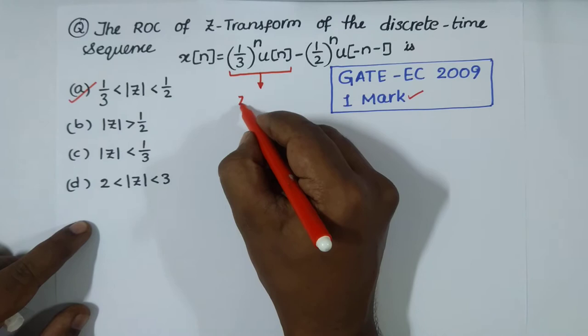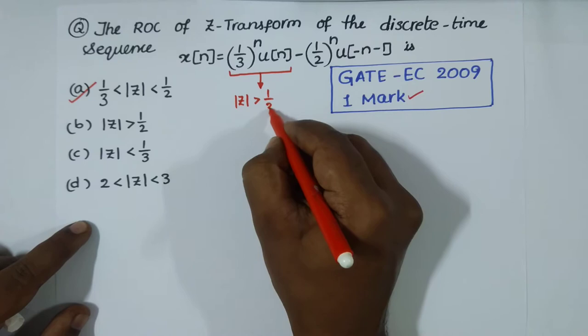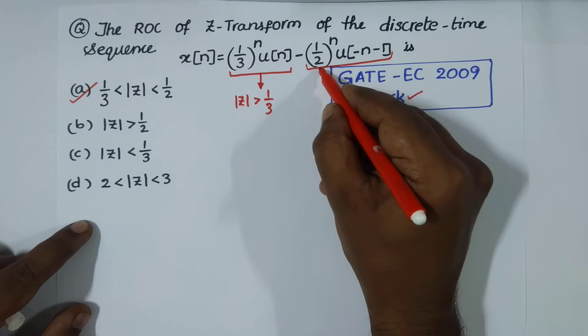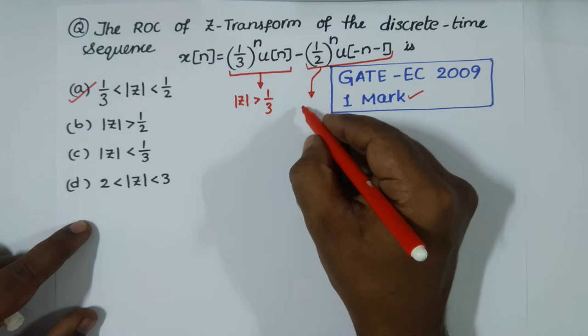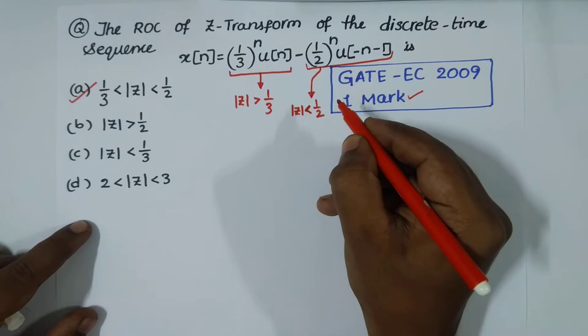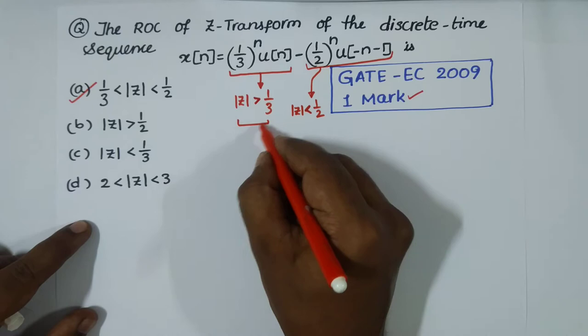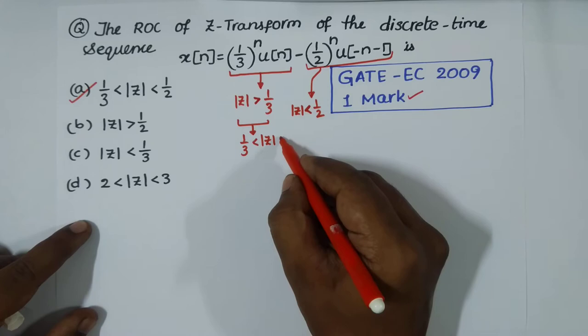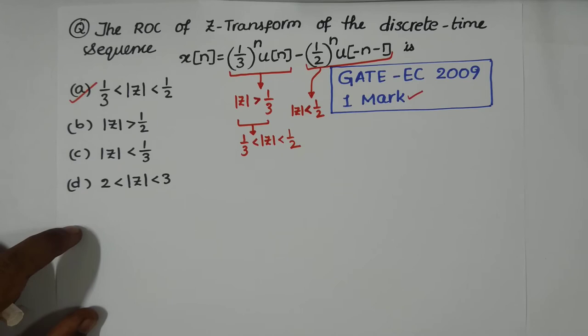Here we have a causal sequence, so the ROC is exterior. The pole is at 1/3, so ROC is |z| > 1/3. The second term is an anti-causal sequence, and for an anti-causal sequence the ROC is always interior, meaning |z| < 1/2. So we have |z| > 1/3 and |z| < 1/2, giving us the combined region.